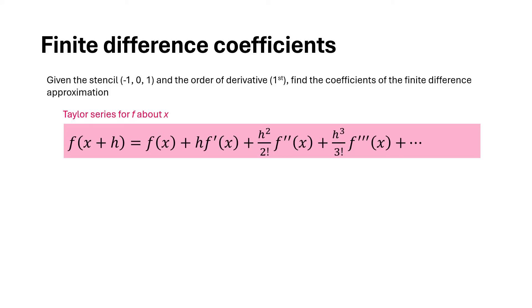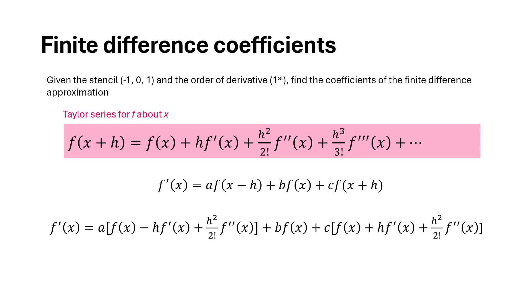Since the given stencil is minus one, zero, one, we want a derivative approximation which is equal to a f(x-h) plus b f(x) plus c f(x+h). And we need to determine the values of a, b, and c to generate the desired finite difference approximations. For that we will replace f(x-h) and f(x+h) by their corresponding Taylor series expansions.